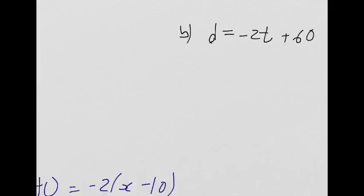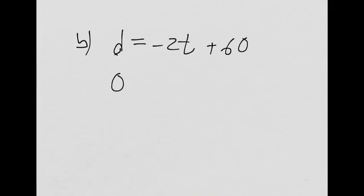So, I want to know, when D is zero, what's the time? How long did it take him to get there? You get the idea? Yes. So negative 2T plus 60. It's all for T now. Right?